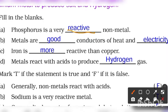Second one: metals are ____. You know, metals are good conductors of heat and electricity, both. So first blank is good, second one is electricity. Next: iron is ____ reactive than copper. Iron is more reactive in comparison to copper.